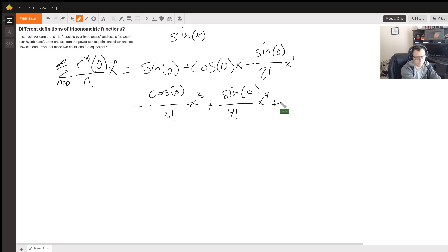And we'll do one more, still plus cosine zero five factorial x to the five.